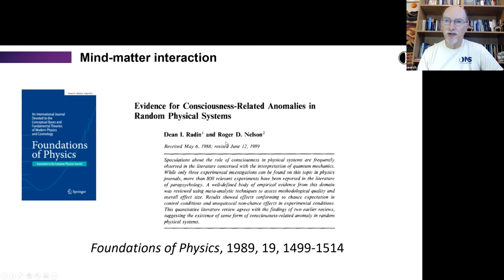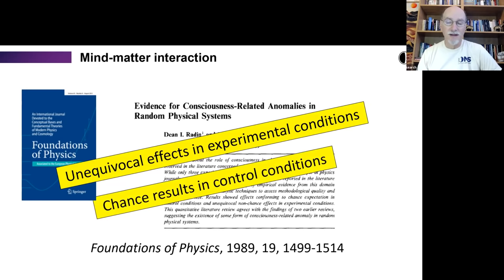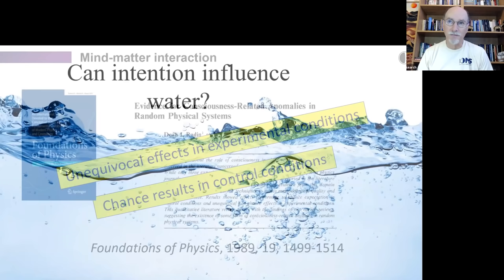So in 1989, I was at Princeton with my colleague, Roger Nelson, we did an analysis of more than 800 experiments of this type. And we found unequivocal effects, positive effects in experimental conditions, and chance results in control conditions. This means that when you look across the board at many different laboratories and investigators, that you see these same effects again and again. So this pretty much establishes that mind can influence matter, at least at a probabilistic scale.